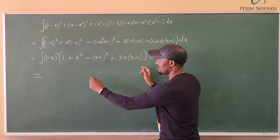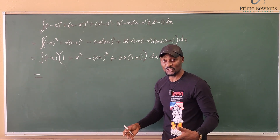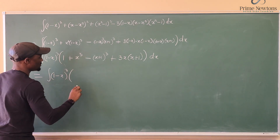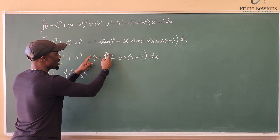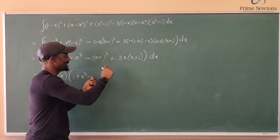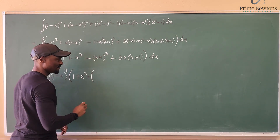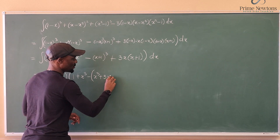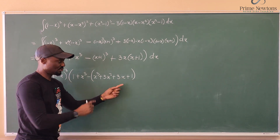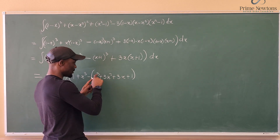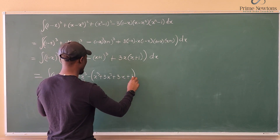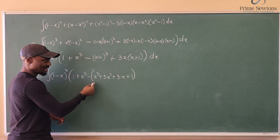Now we only have to deal with what's inside the brackets. We have the integral of (1-x)³ multiplied by [1 + x³ minus the expansion of (x+1)³ plus ...]. Using Pascal's triangle for the binomial expansion: (x+1)³ = x³ + 3x² + 3x + 1, using coefficients 1, 3, 3, 1.